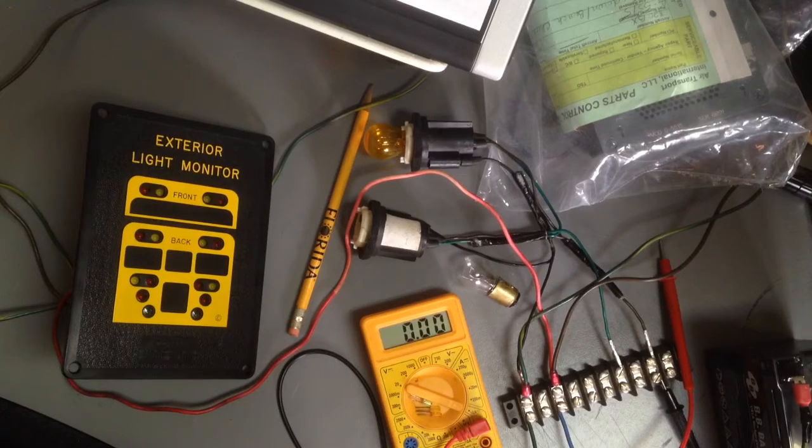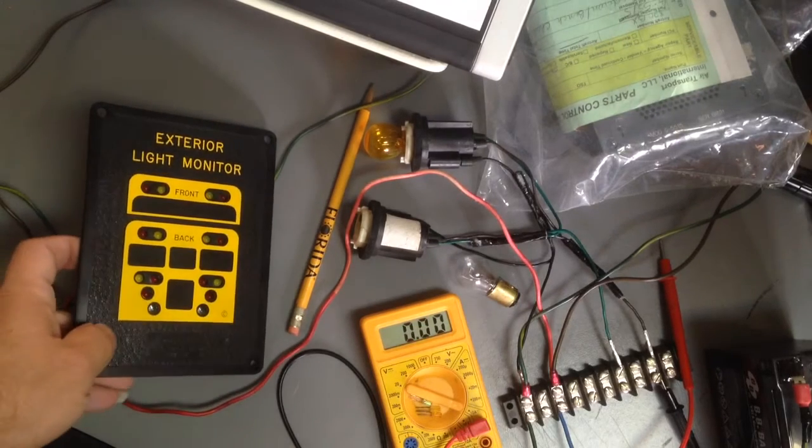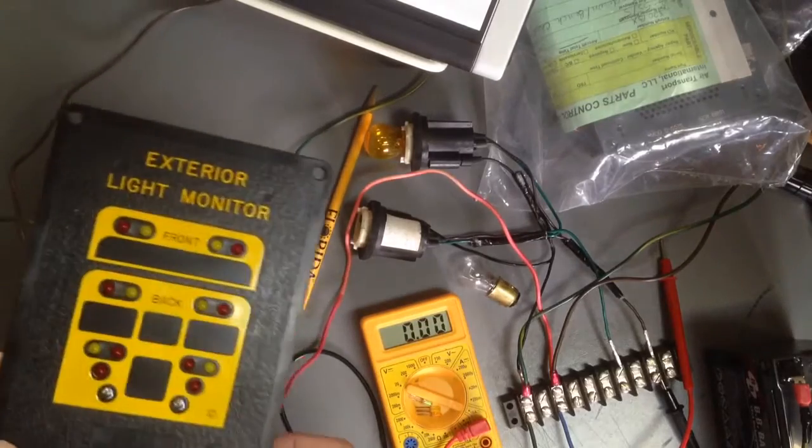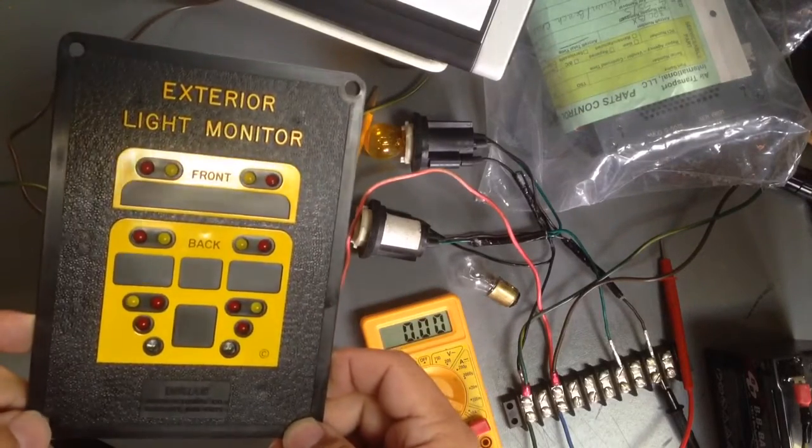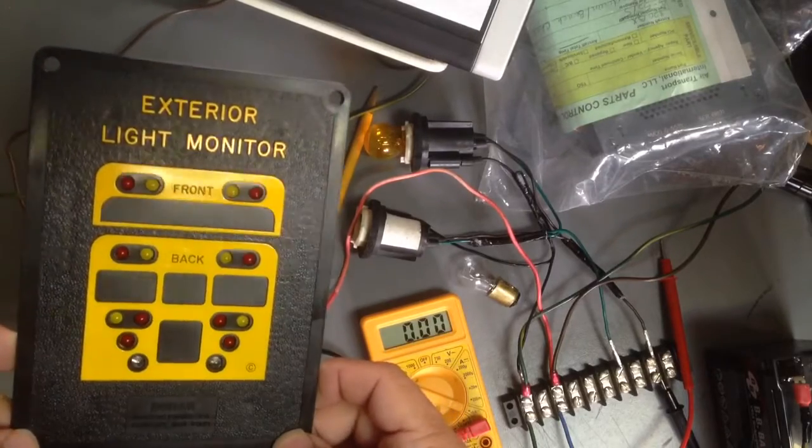Testing the light monitor panel. These are the common light monitor panels that I've noticed appear around usually around the Bluebird bodies.